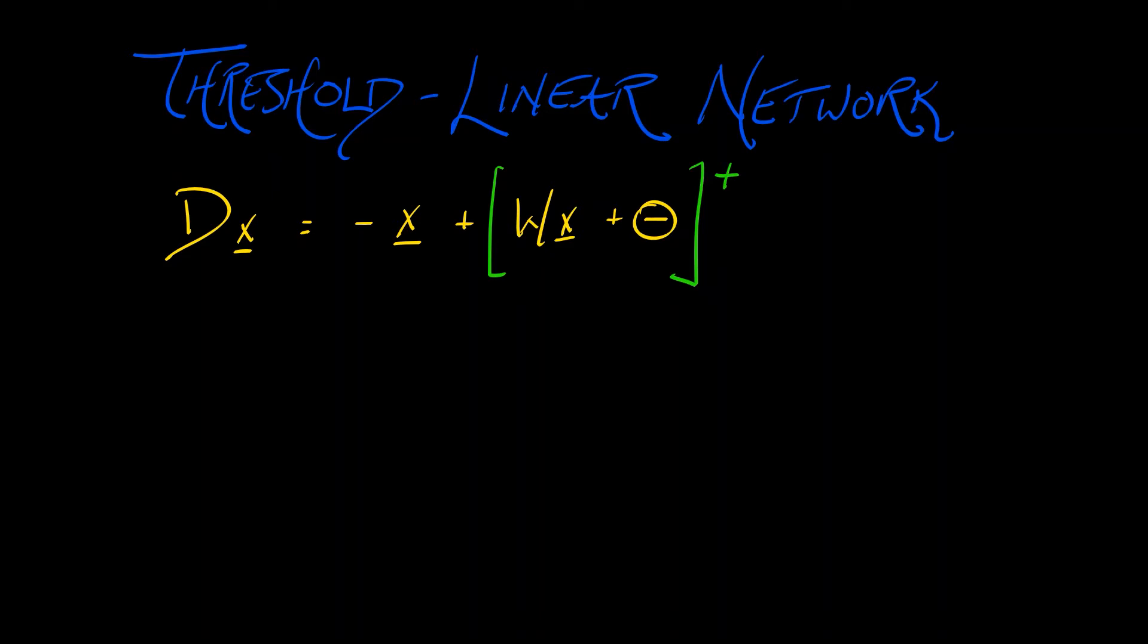Now we've looked at what happens when that matrix w that tells you how neurons influence their neighbors, when that is weakly inhibitory or strongly inhibitory, that is on one or the other side of negative one. Now there's an interesting case.